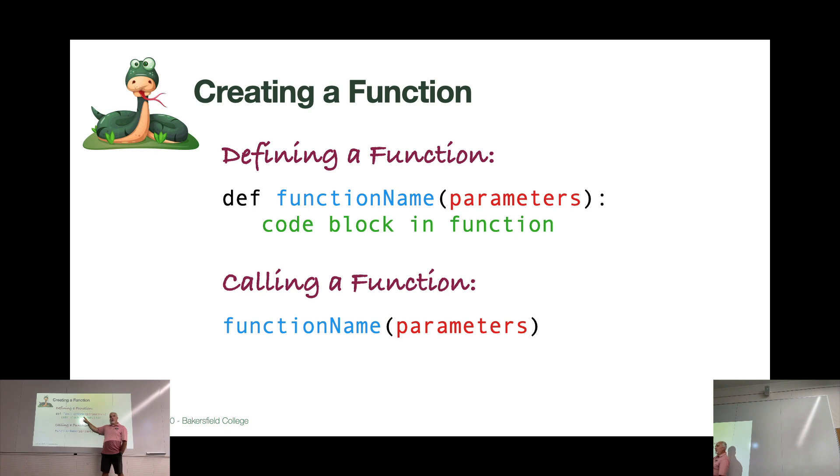When I want to use it in my code later on, I give the function name and the parameters, or the function name and empty parentheses if there are no parameters. So an example of that would be like print, and then I give it a string. Or input, and I give it a prompt. Those are functions that we've been using a lot in this class so far.